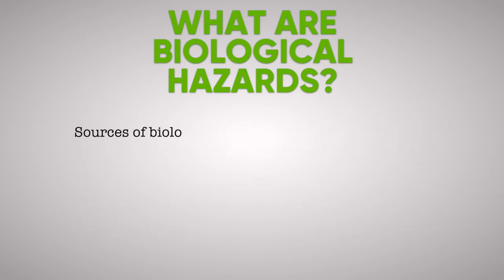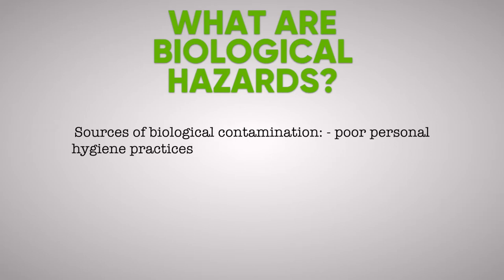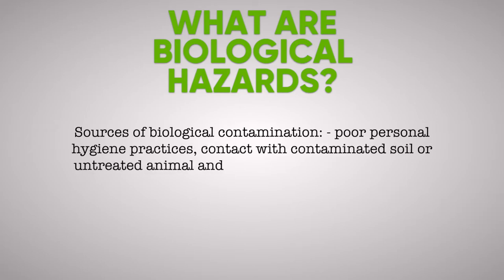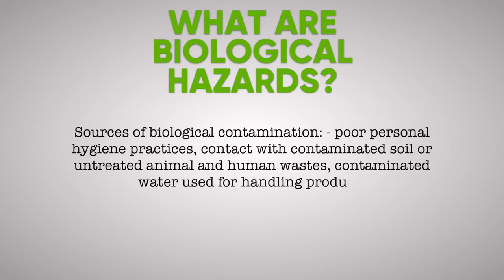Sources of biological contamination can come from poor personal hygiene practices such as coughing and not washing hands properly or regularly, contact with contaminated soil, untreated animal and human waste, or contaminated water used for handling produce.